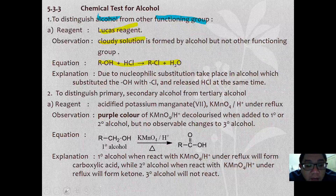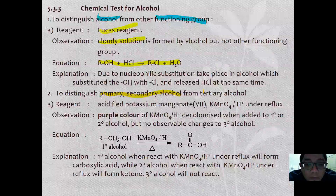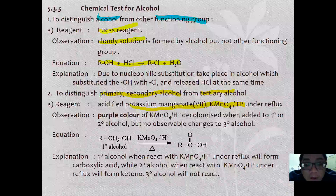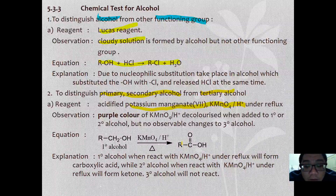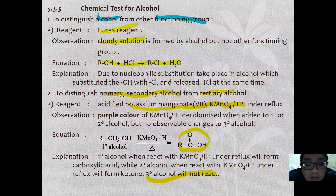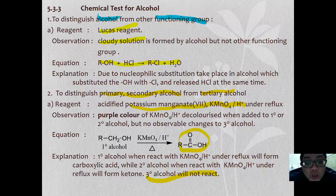The second reaction is how to distinguish primary and secondary alcohol from tertiary alcohol. You can use acidified potassium manganate or acidified potassium dichromate. For primary and secondary alcohol, they will be oxidized to become carboxylic acid and ketone respectively. But for tertiary alcohol, it cannot undergo the reaction. This is a major test to distinguish between primary, secondary, and tertiary alcohol.